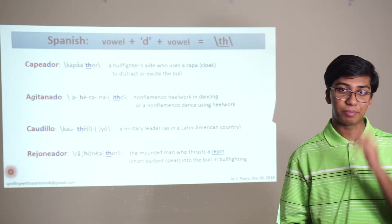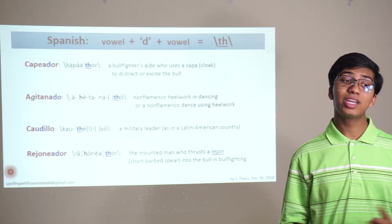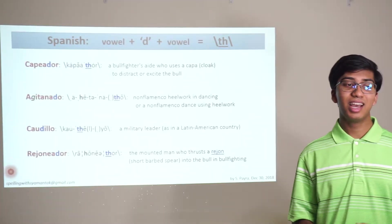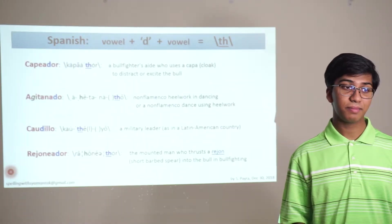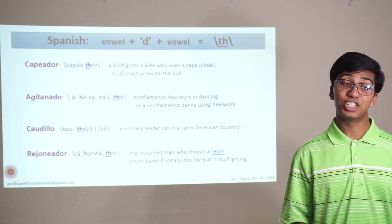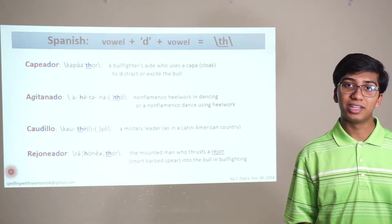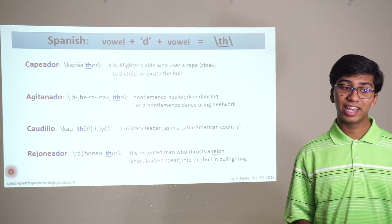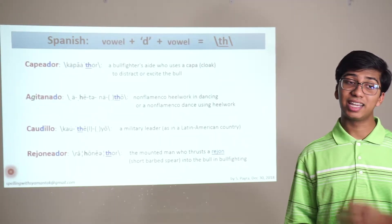Here's an opportunity to test yourself. Agitanado means gypsy-like; it comes from gitano meaning gypsy. That one is spelled A-G-I-T-A-N-A-D-O. Colegio means secondary school — basically college — and that one's spelled C-O-L-E-G-I-O. And cogida is a tossing of a bullfighter by a bull, spelled C-O-G-I-D-A.